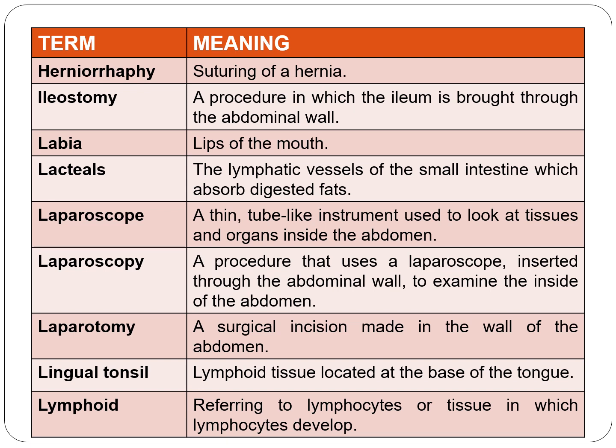Laparotomy — 'otomy' means incision — is a surgical incision made in the wall of the abdomen. Lingual tonsil is lymphoid tissue located at the base of the tongue. Lymphoid refers to lymphocytes or tissue in which lymphocytes develop.